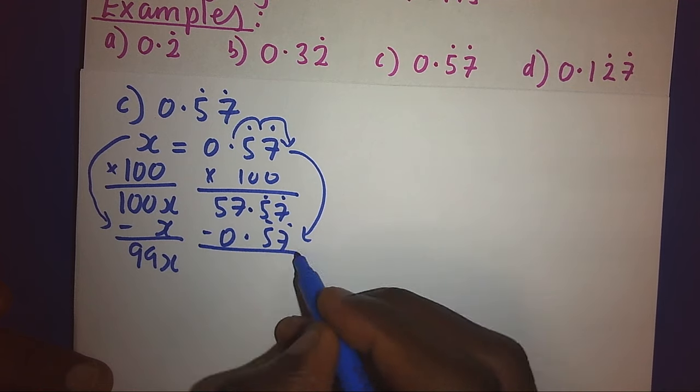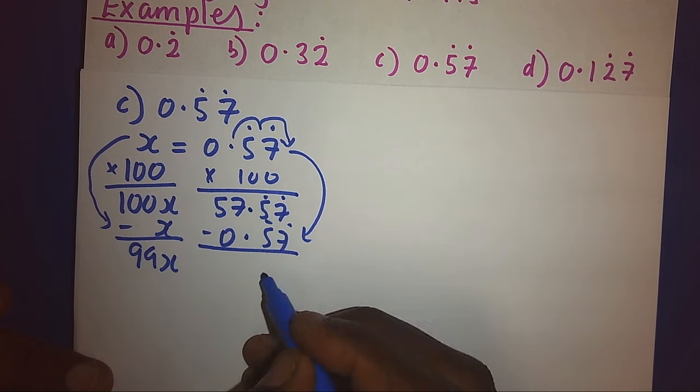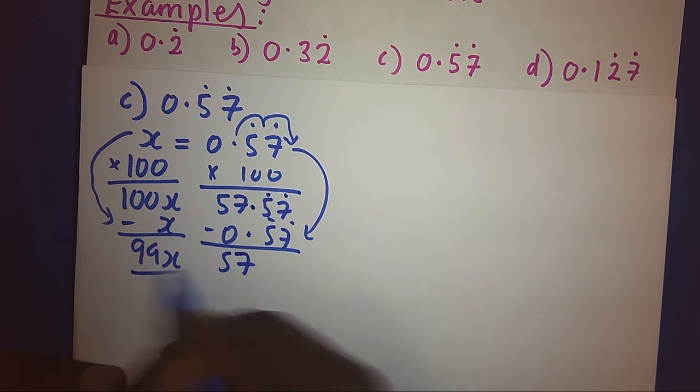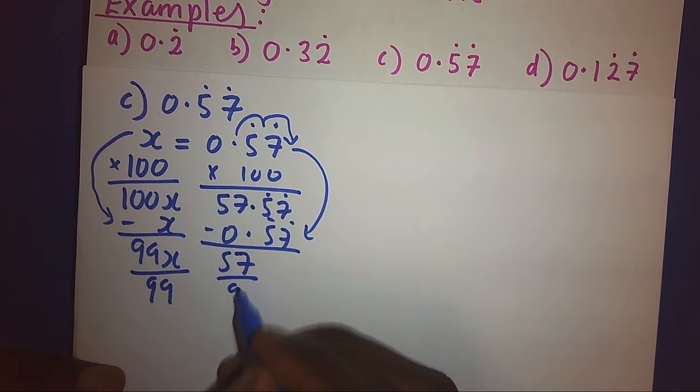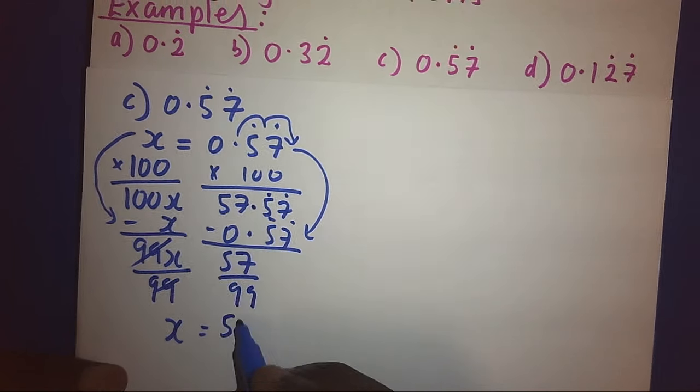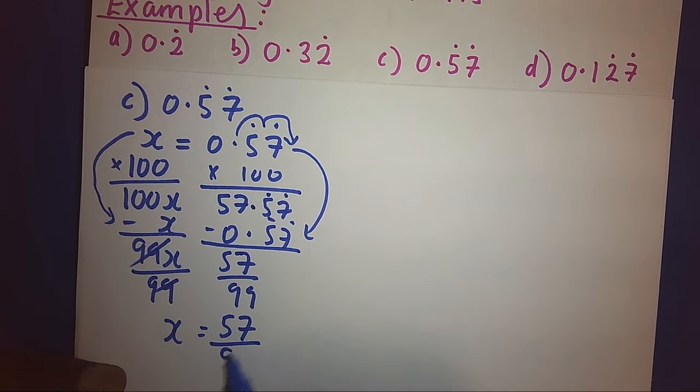And this is 0, this is 0 and we're left with 57. We shall divide both sides by 99. Hence, our x would be 57 over 99.